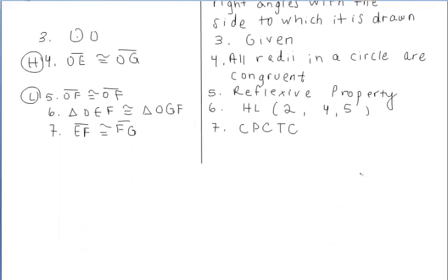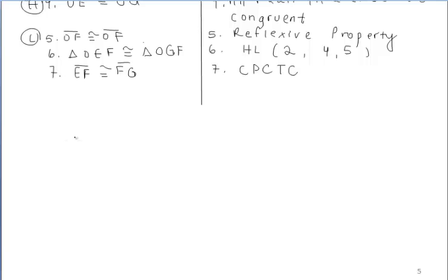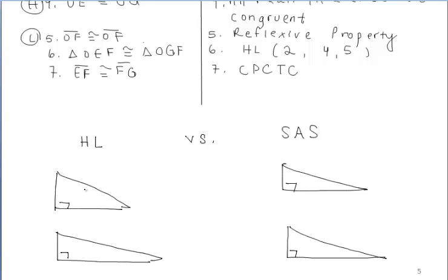I want to compare side angle side and HL, as I mentioned earlier in the notes. Just because we've been working with right triangles does not mean you'll always prove right triangles congruent using HL — you can still use side angle side. It just depends where your angle is located and which two sides are congruent. Follow the tick marks: to use HL on the left, you need a pair of corresponding legs congruent and their hypotenuses congruent. To use SAS on the right, the right angle must be included between the two congruent consecutive sides, with no marks on the hypotenuses.